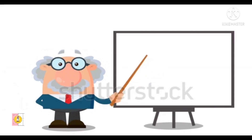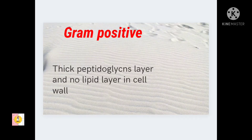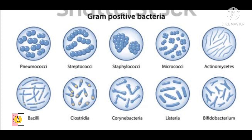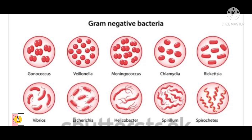Before going to the theory of gram staining, let's learn about gram positive and gram negative bacteria. Gram positive bacteria are bacterias which have a thick peptidoglycan layer and no outer lipid membrane in their cell wall. These bacterias give a positive result in the gram staining test. Examples are Streptococcus and Staphylococcus. Gram negative bacteria have a thin peptidoglycan layer and an outer lipid membrane. An example is Pseudomonas.